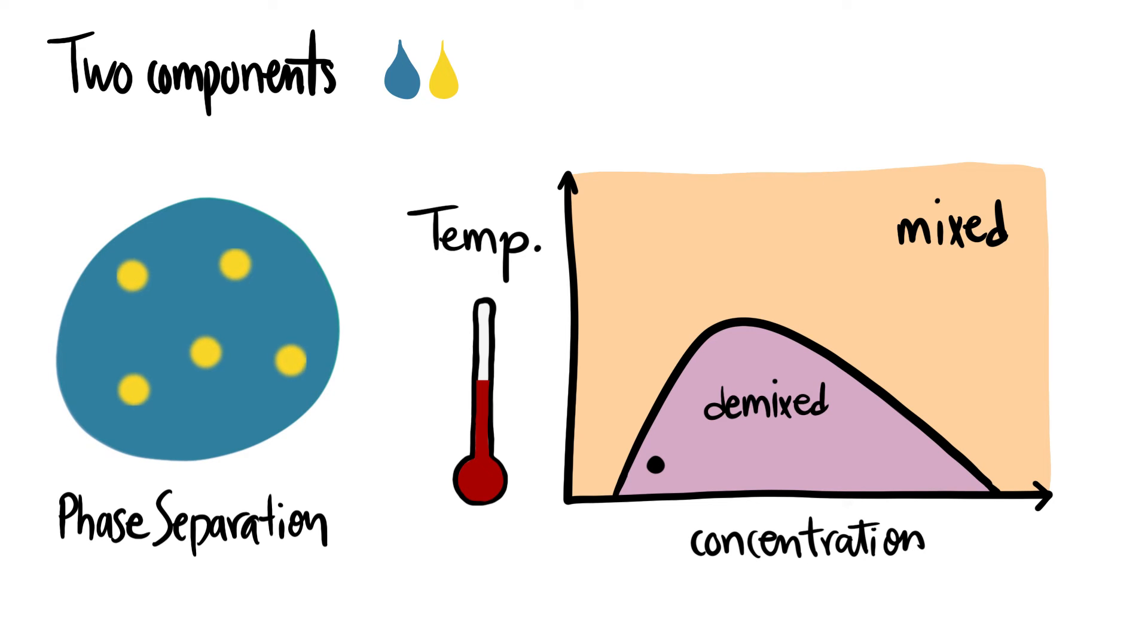With time, the small droplets will grow until the system reaches equilibrium. At equilibrium, the system will be demixed into two phases with concentrations given by the binodal at this temperature.